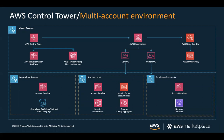When AWS Control Tower is initially set up, it creates a core OU and a custom OU underneath the AWS Organizations environment. Under the core OU, you'll find a log archive account and an audit account — the audit account is equivalent to the security account. The log archive account hosts a central S3 bucket containing all CloudTrail and AWS Config logs. Any new member accounts spun up by Control Tower will automatically receive CloudTrail and AWS Config, with logs sent to the log archive account. Security notifications and Amazon Config data are aggregated in the audit account.